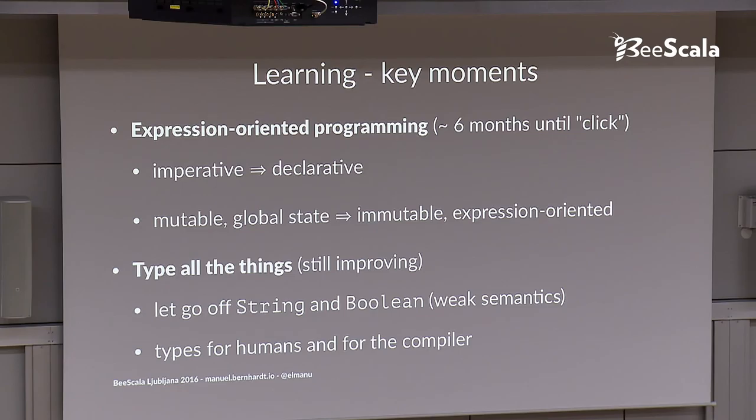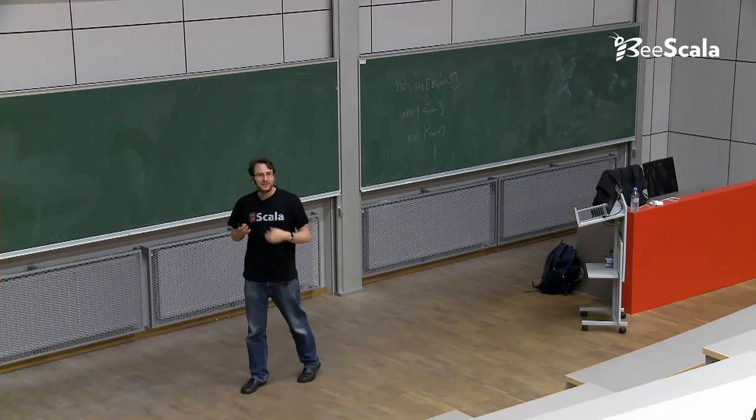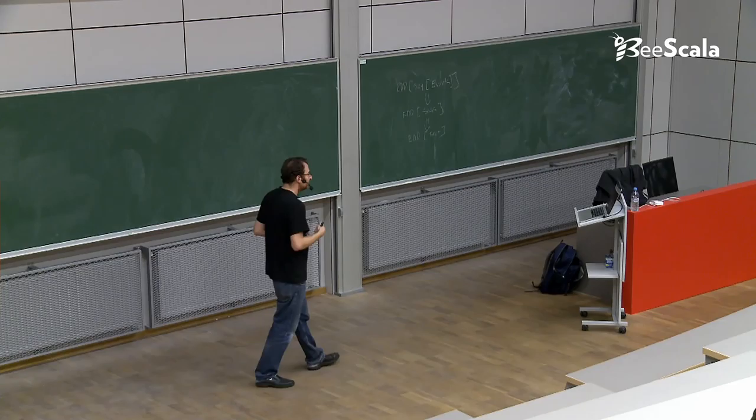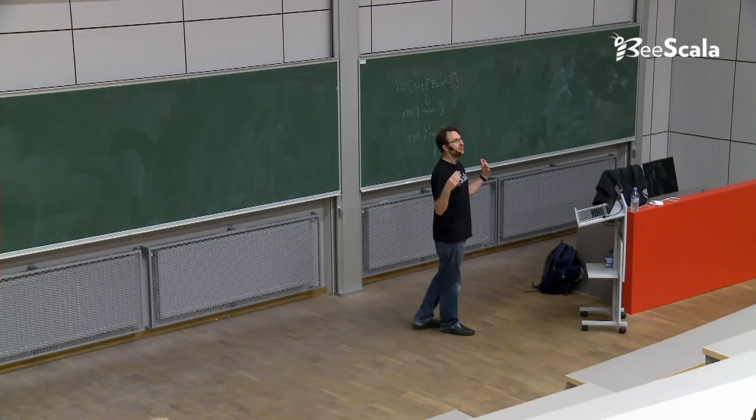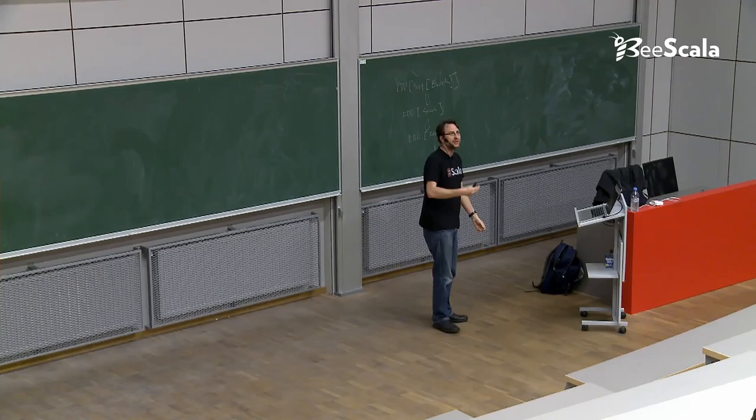The second thing, and I'm still learning on this, is using types. And when I say types, I mean strong semantics, like not string or boolean, but actual types with user, car, whatever your domain model gives you, using these everywhere. It helps the compiler to catch your errors, but it also helps you to write code that's easier to read for human beings.